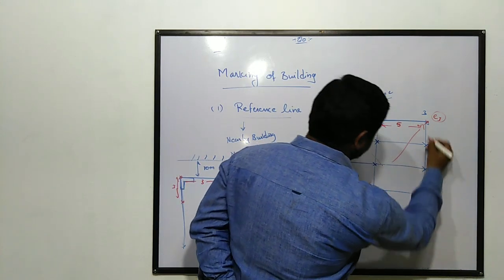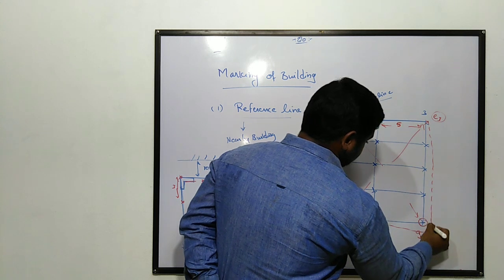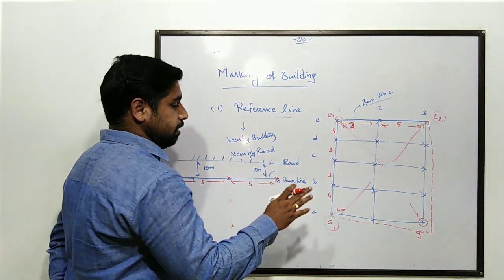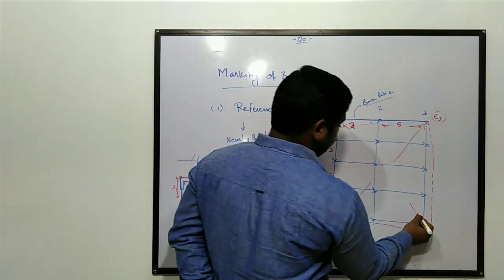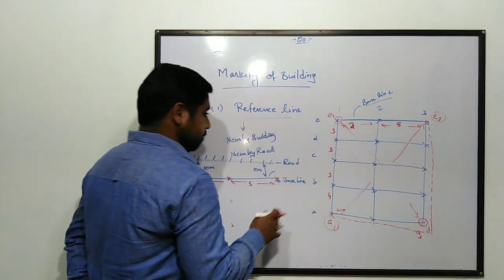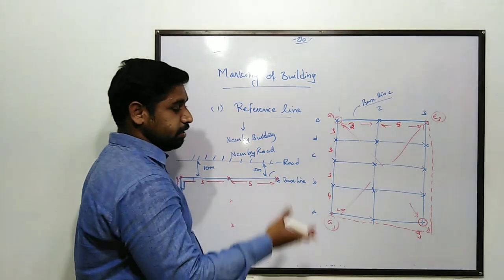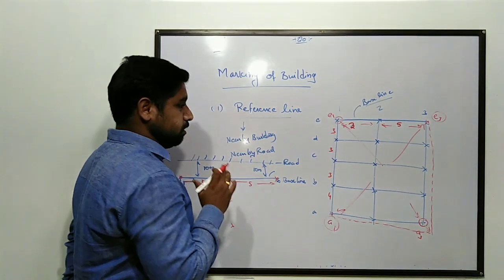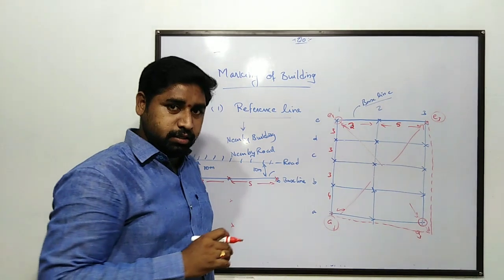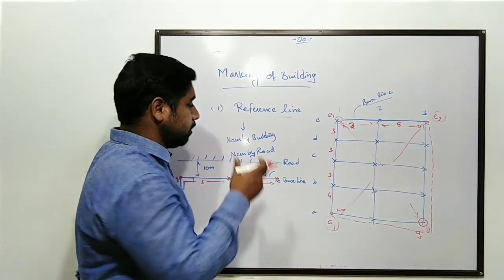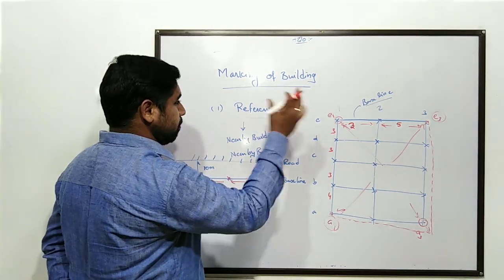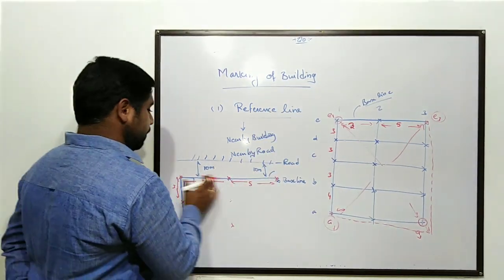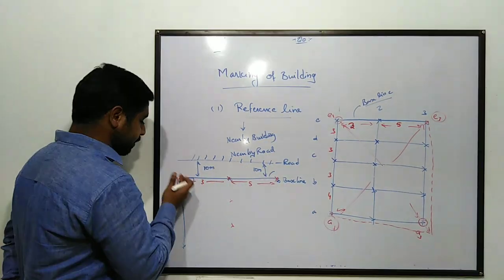If there is any deviation in the building plan marking on the ground, we check the diagonal. If the diagonal increases, we check the deviation. So first of all: reference line, base line, perpendicular — and then check the diagonals to confirm accuracy.